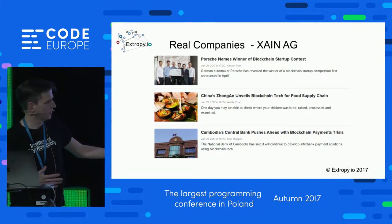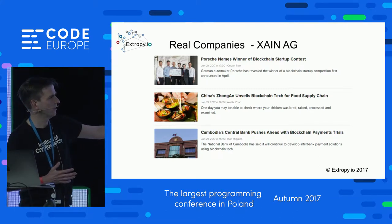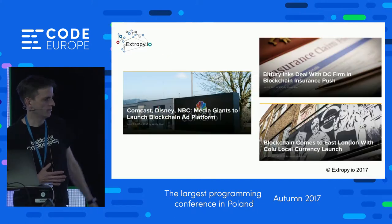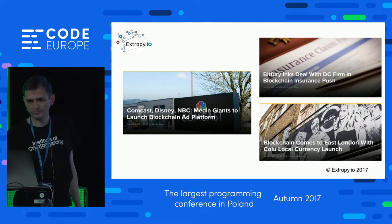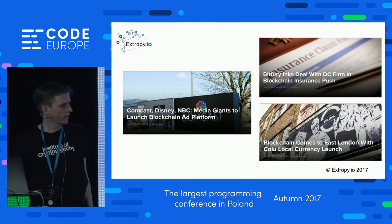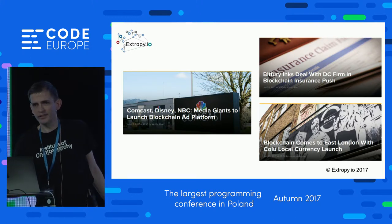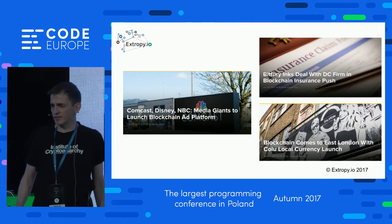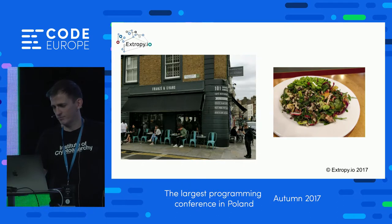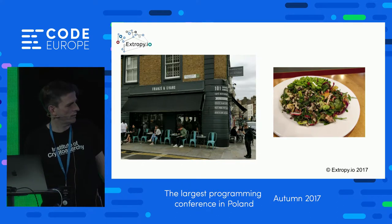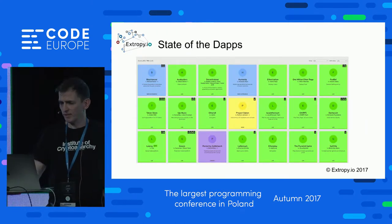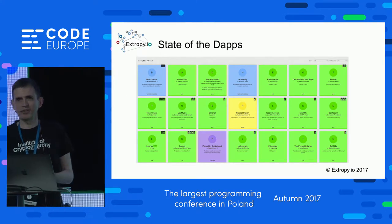There are news items from many different areas: supply chain, central banks getting into blockchain, advertising, insurance. There's even a currency in London that you can use to pay for local restaurants. If you're interested in applications on Ethereum, there's a site called State of the Dapps where people promote their applications.